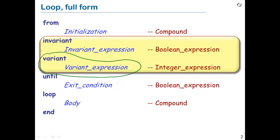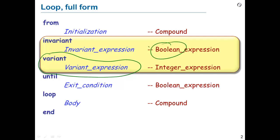Unlike the invariant expression, which was Boolean, the variant expression is an integer expression. And in fact, its values are going to be not just integers, but natural integers — non-negative integers. They can be zero, they can be positive, but they cannot be negative.